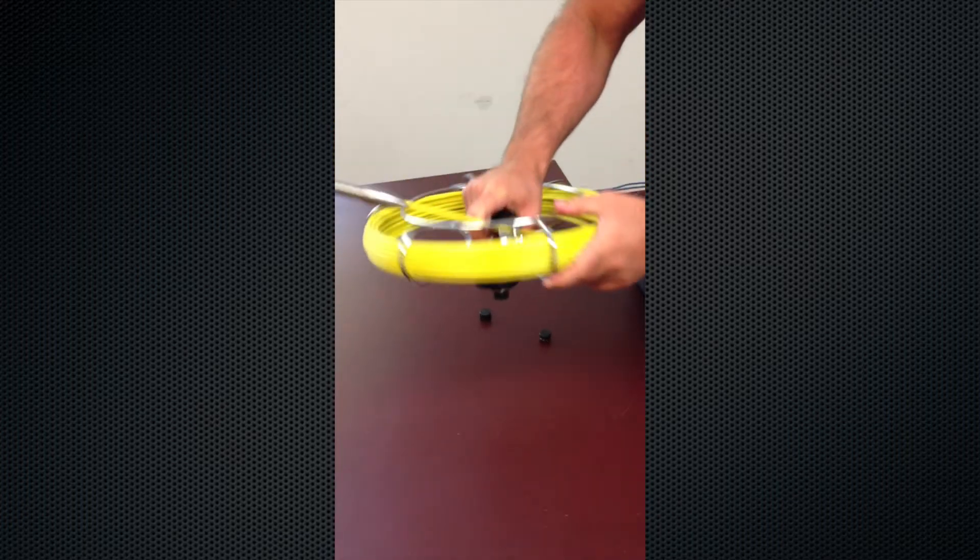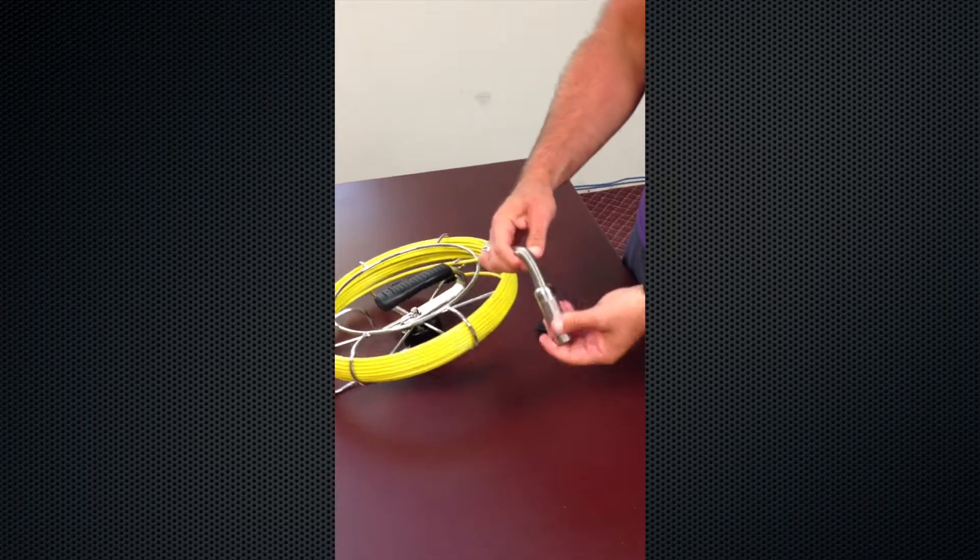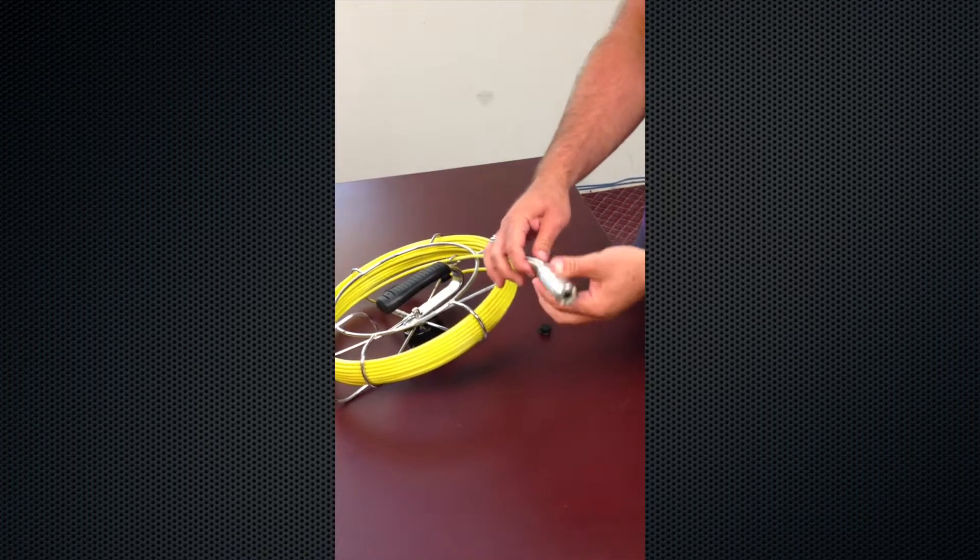Be careful if the camera head gets jammed on something. Don't force or tug it through. There are wires that come through the spring section and you don't want to break any of those, otherwise you'll lose your image.